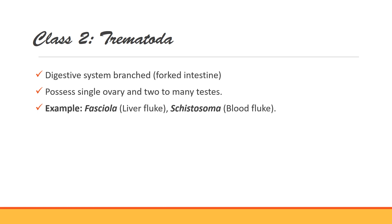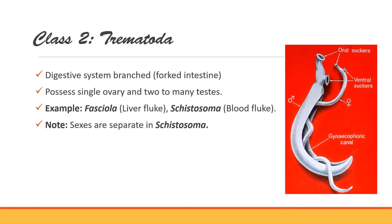One exceptional case: Schistosoma has separate sexes — this genus occurs as separate male and female. A very unique feature is seen in Schistosoma: the male has a groove-like structure called the gynecophoric canal, and the female lives inside this canal. So this is a very unique feature of the blood fluke or Schistosoma.